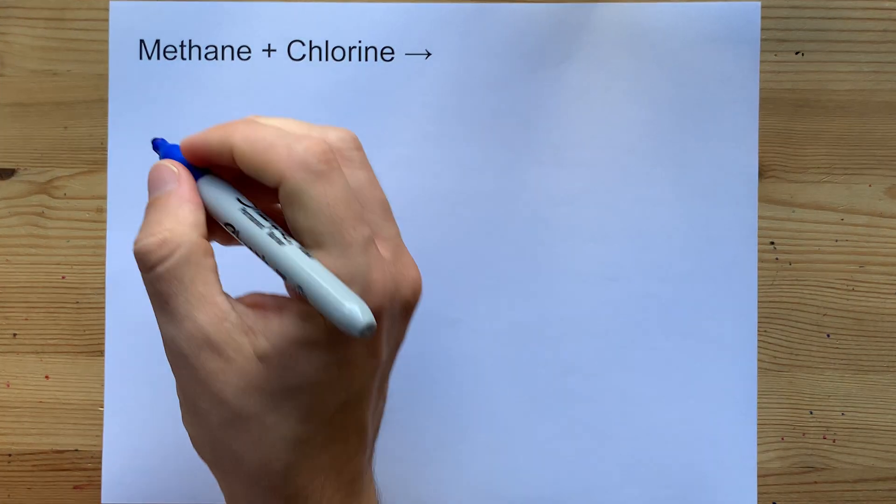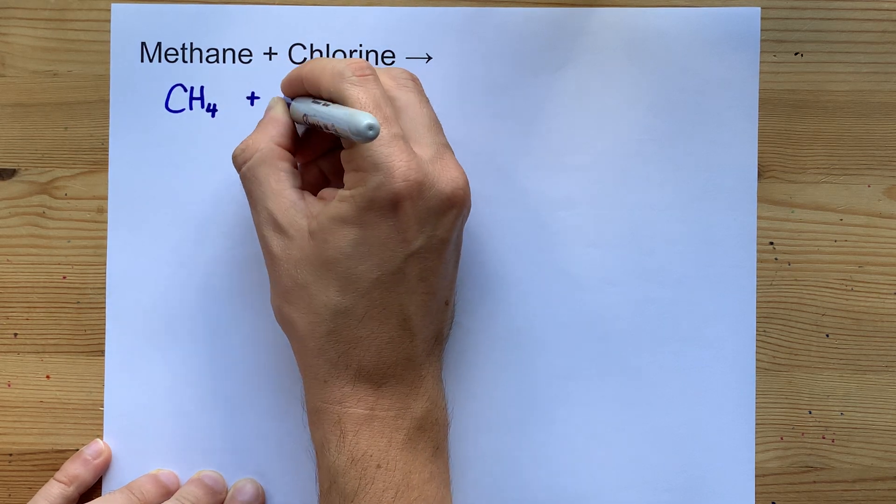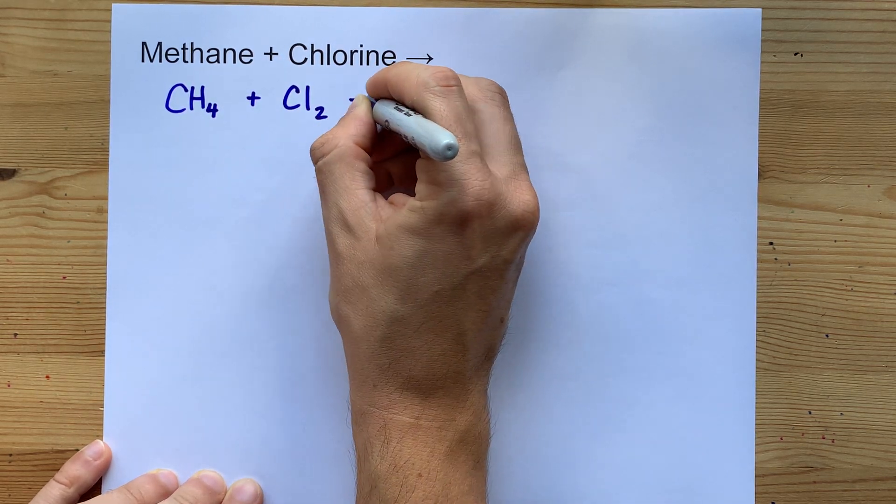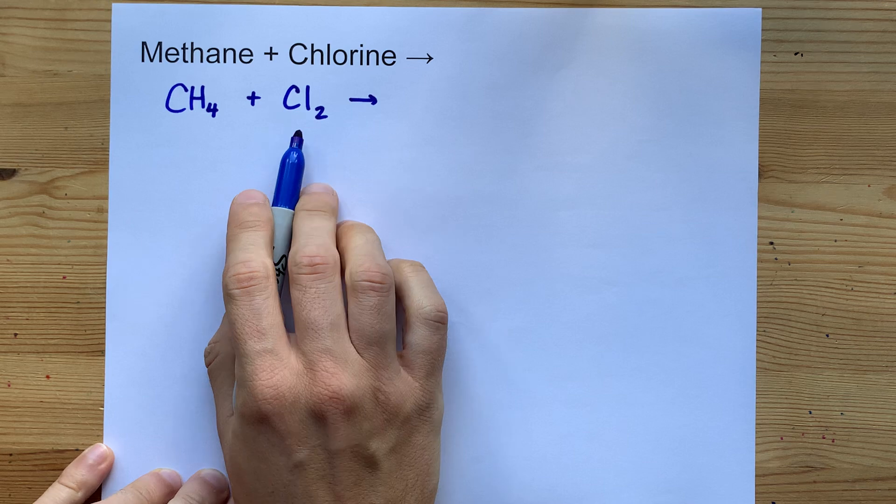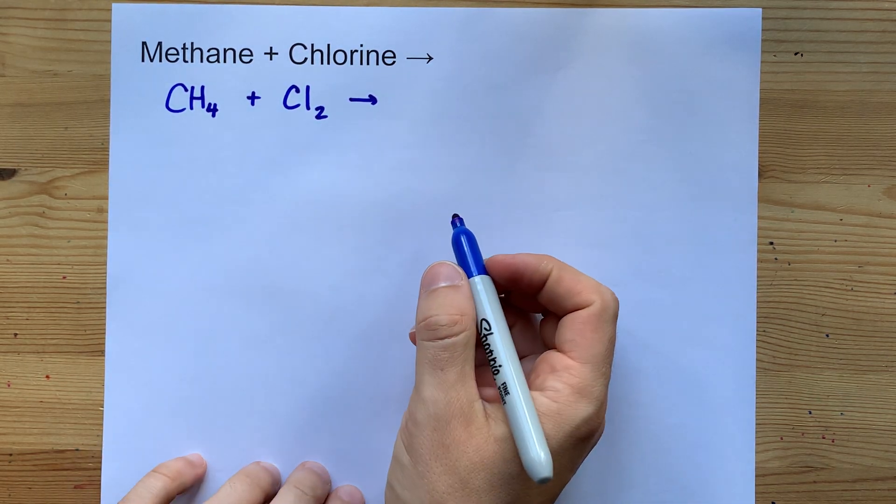Methane plus chlorine is a chaotic reaction. CH4 will only react with Cl2 as long as there's UV light around which will help to break this molecule apart into two chlorine radicals.